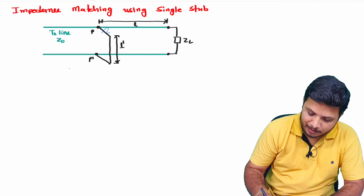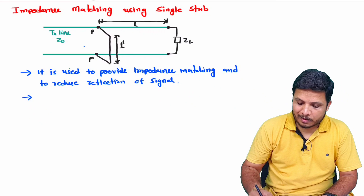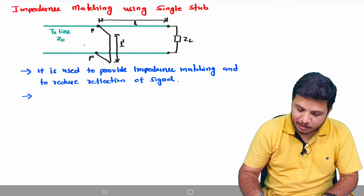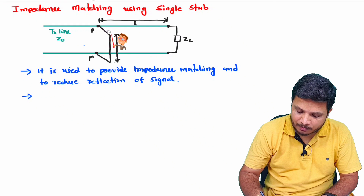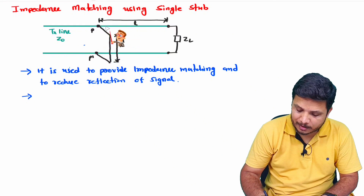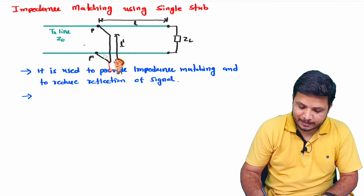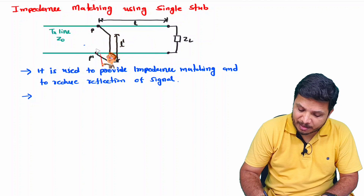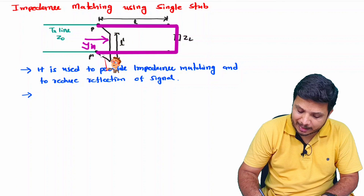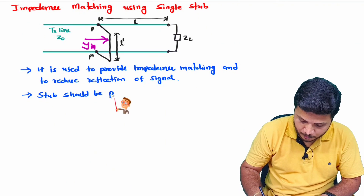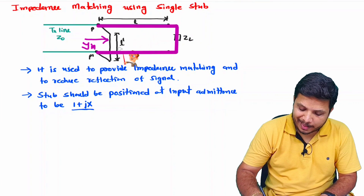We are using this stub for impedance matching. The first question is to find the location of the stub. We need such a location where the normalized input admittance of this transmission line is 1 + jx. This location PP' should satisfy that condition, which is what we will use to derive the formula for L and L'.